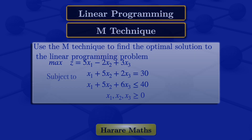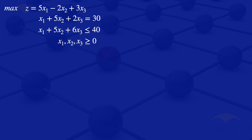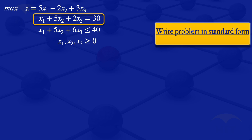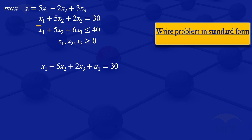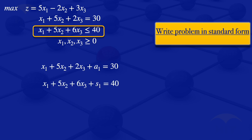The first step is to write the problem in standard form. Looking at the constraint x1 plus 5x2 plus 2x3 equals 30: when using the M technique with an equality constraint, we add an artificial variable a1, giving x1 plus 5x2 plus 2x3 plus a1 equals 30. For the second constraint, x1 plus 5x2 plus 6x3 less than or equal to 40, we add a slack variable s1, giving x1 plus 5x2 plus 6x3 plus s1 equals 40.